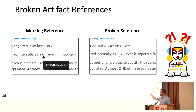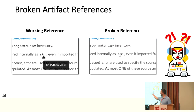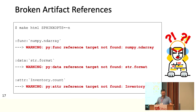A working reference has the object, the tooltip, and a link, and it all works very nicely. But if you do it wrong, it looks like it's supposed to — you have that nice reference formatting — but it's just text. There's no link, no tooltip. It's just markup.